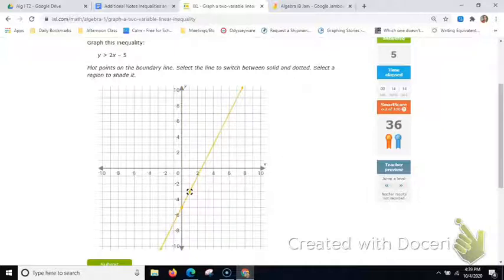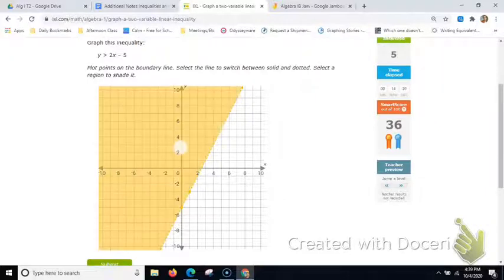So this one, y is greater than 2x minus 5. So we would be starting at negative 5, and then up 2, and over 1. Then you need to ask yourself, is this a solid or a dotted line? This would be a dotted line. And the shading, y is greater, so the shading would be above. Think about on the y-axis, where are the numbers greater than that negative 5? Heading up this way.